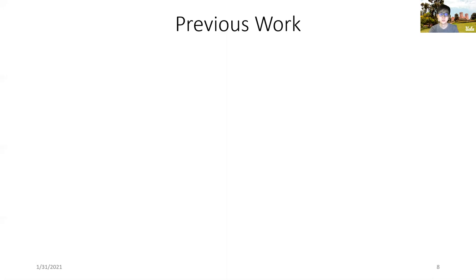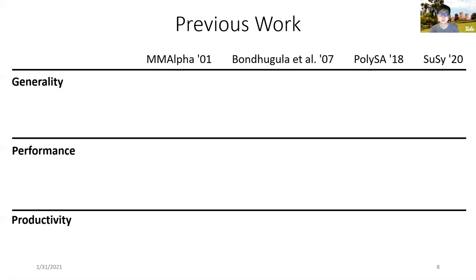Automatic systolic array generation has been an area that has been long studied. However, coming to designing systolic arrays in the real world, we found this work hardly being used, while manually designing systolic arrays remains the norm. To understand this situation, we look further into a few representative previous works. When assessing these frameworks, we consider three metrics: generality, performance, and productivity.